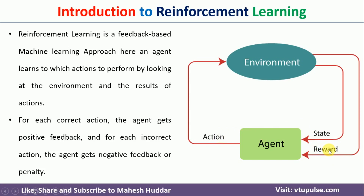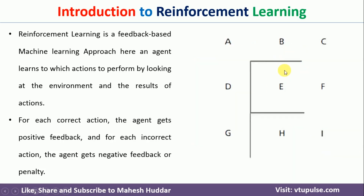The reward may be positive — for example, if he has performed a correct action, he will be given a positive reward. It may be negative also, that is whenever he has performed an incorrect action, he will be given a negative reward. In this example, let us say that G is a goal state and the agent is present in state E. The goal is for the agent to go from state E to G and follow an optimal path.